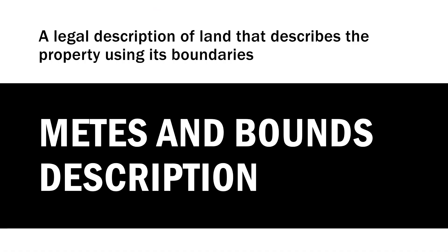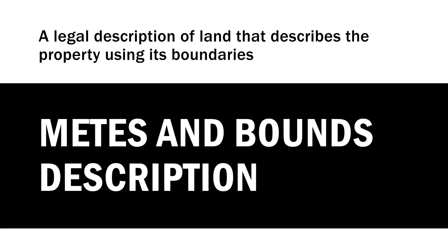M for metes and bounds legal description. This is a kind of legal description whereby we are describing land based on the property's boundaries. Think about the land being like a rectangle — we use different markers or boundaries around the property, and distance and angles, to help us define the land. This is the oldest method ever used. We start at the point of beginning and go clockwise all the way around the property until we come back to that point of beginning. For boundary markers, we could use man-made monuments or natural monuments.